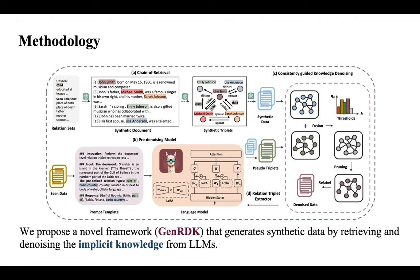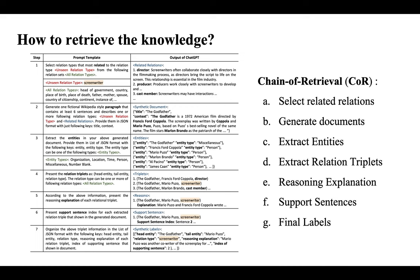This is our solution framework. We propose a novel framework to generate synthetic data by retrieving and denoising the knowledge from large language models. The first question is how to retrieve the knowledge from large language models. We propose a chain retrieval prompt for guiding ChatGPT to generate documents and various relation triplets step by step.